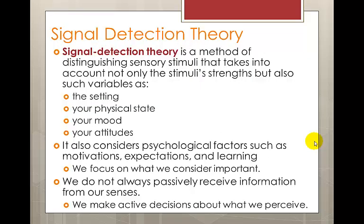Signal detection theory is a method of distinguishing sensory stimuli that takes into account not only the stimulus strength, as other theories do, but also variables like the setting, your physical state, your mood, and your attitudes. For example, it would be much easier to hear in a quiet room versus a loud room. If I have a cold, I won't be able to taste food as well. Your mood and attitudes also affect how you perceive sensations. It also considers psychological factors such as your motivations, expectations, and your learning. Basically, you focus on what you consider important and make active decisions about what you perceive and what you sense.